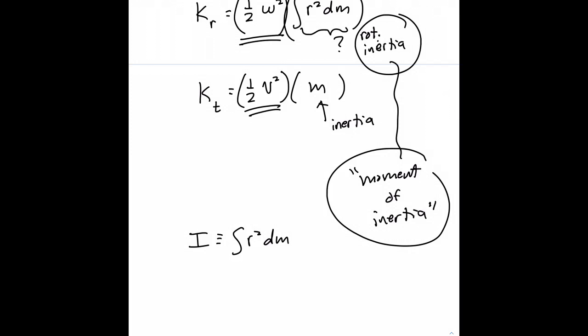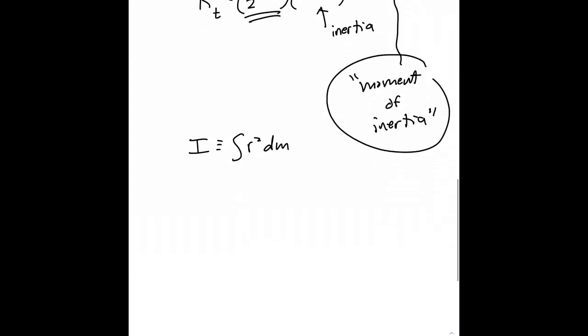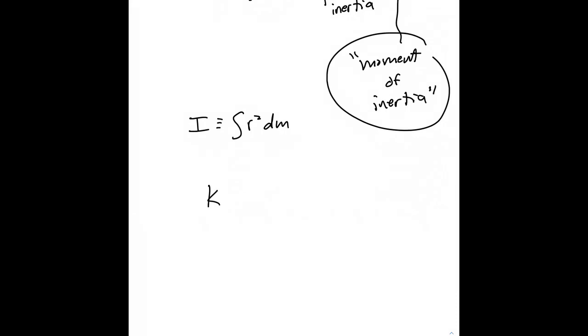If we do that, then we notice this is just the quantity I, rotational inertia. So we can say that rotational kinetic energy is equal to one-half times omega squared times I, or better yet, one-half I omega squared, and that looks strikingly similar to our equation for translational kinetic energy, one-half m v squared.